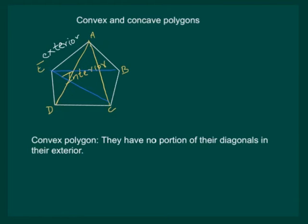If we draw diagonals from vertex D, then DA and DB will also lie in the interior of this pentagon. Similarly, from vertex C, CA and CE will lie in the interior of the pentagon. So, we can say that pentagon is a convex polygon.